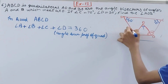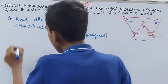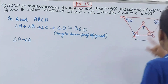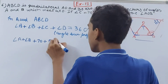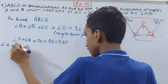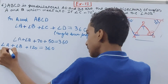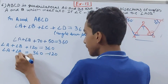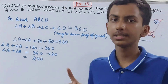We don't know angle A and angle B, so we leave them as they are. Angle C is 70 degrees and angle D is 50 degrees, so angle A plus angle B plus 120 equals 360. Therefore, angle A plus angle B equals 240 degrees.